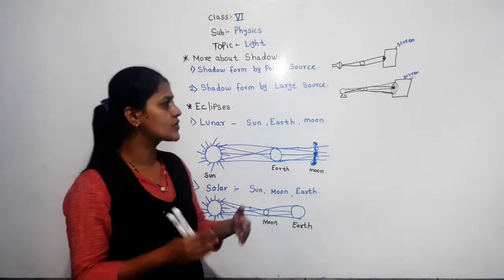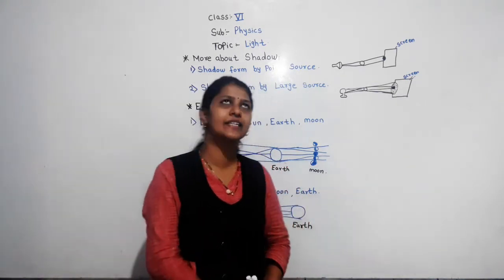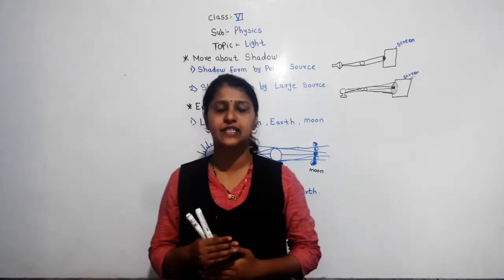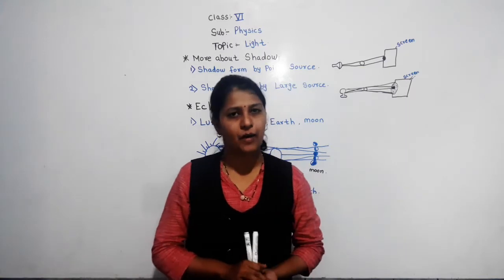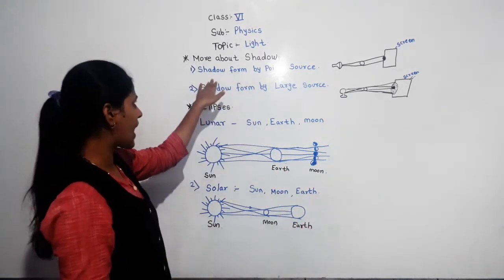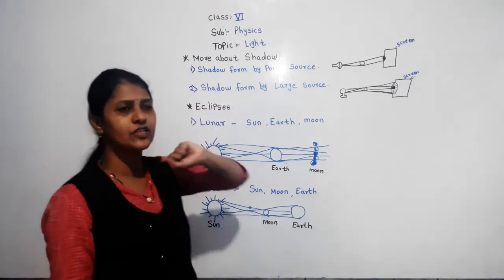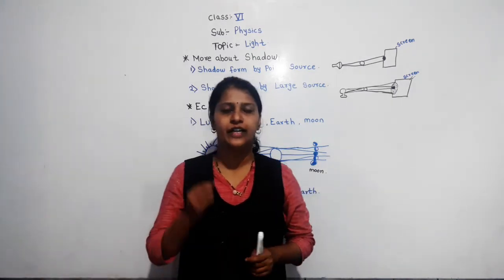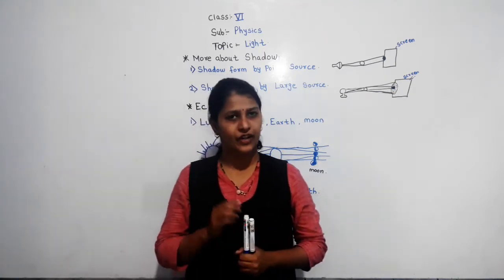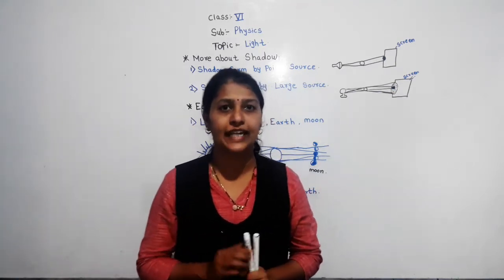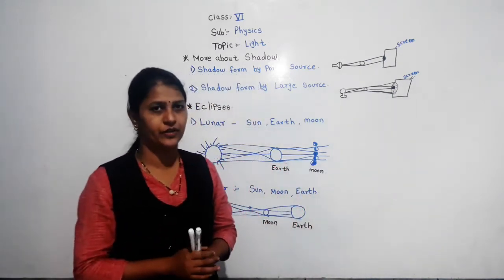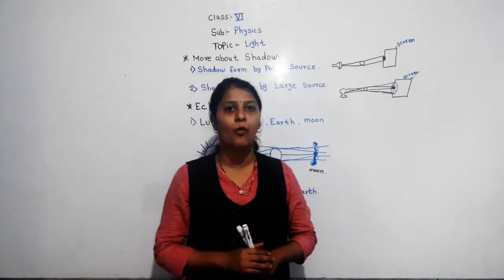In today's video we are going to discuss more in detail about the shadow. We will look at the shadow formed by a point source. A point source means the source of light is very small — for example, a laser light or a torch. These have a point source.